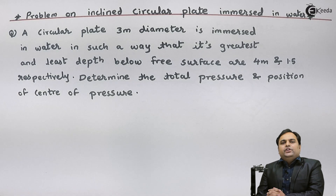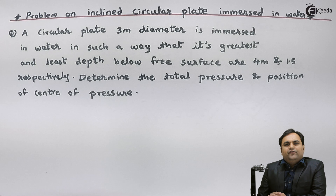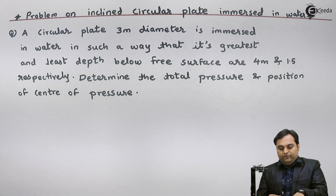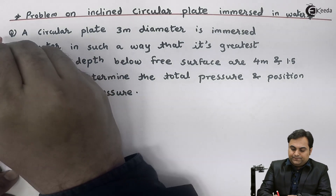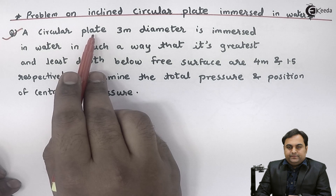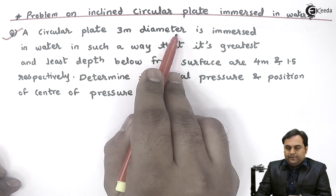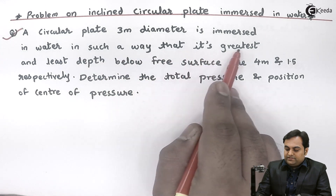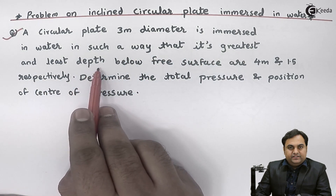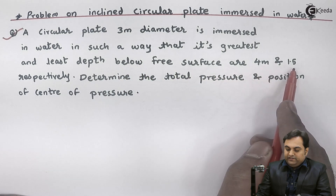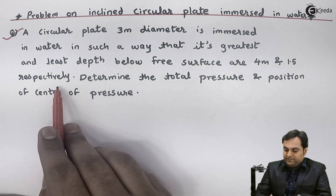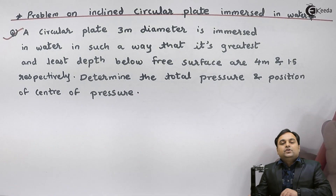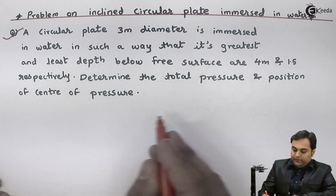Hello friends, in this video we will see a problem of an inclined circular plate immersed in water. A circular plate of 3 meter diameter is immersed in water such that its greatest and least depth below the free surface are 4 meter and 1.5 meter respectively. Determine the total pressure and position of center of pressure.